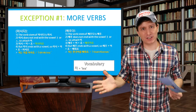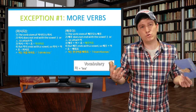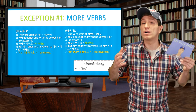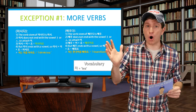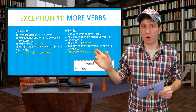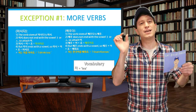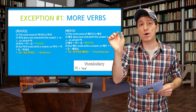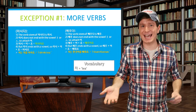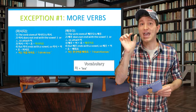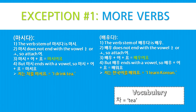Next, 배우다 (to learn). 우 doesn't end with 아 or 오, so we attach 어: 배우 + 어. It ends with just a vowel and no other consonants, so we combine to get 배워, then add 요: 배워요. Sentence: 저는 한국어를 배워요 — I learn the Korean language.